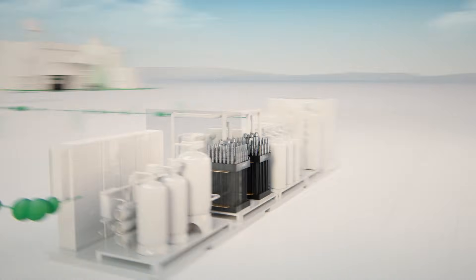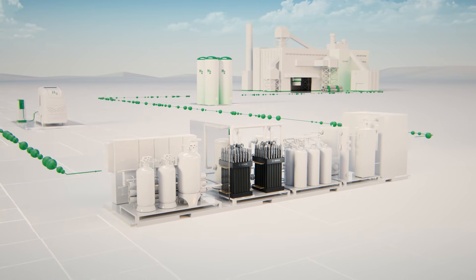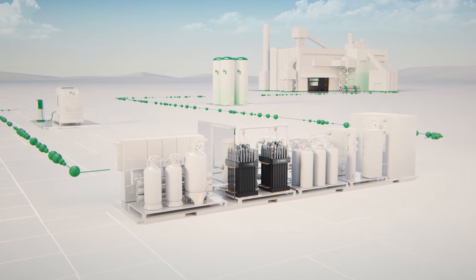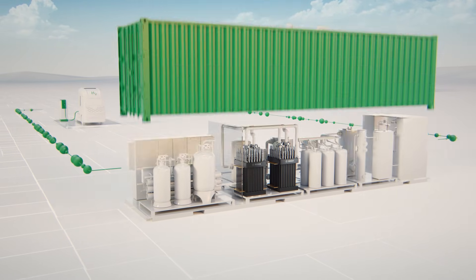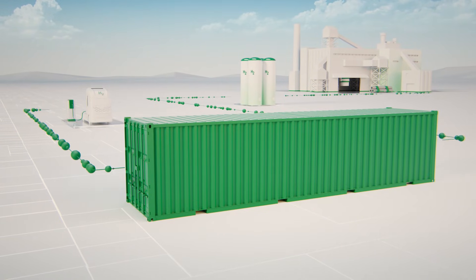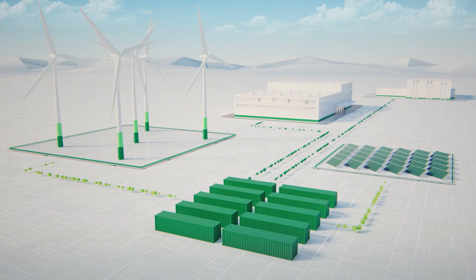In scalable, decentralized plants with capacities of 1 to 10 megawatts, the 1.25 megawatt PEM electrolysis stack is ideal for being integrated into container solutions. These containers can then be installed directly where the hydrogen is required.